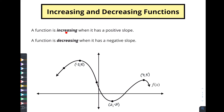A function is considered increasing when it has a positive slope, and a function is considered decreasing when it has a negative slope. Here we've got some function that we're defining as f of x, and I've highlighted a few key points. We need to figure out where does this thing have a positive slope and where does it have a negative slope. We can determine the slope at any point along this curve by finding the tangent line and looking at what the slope is of the tangent line.